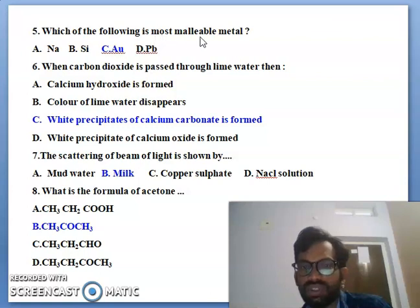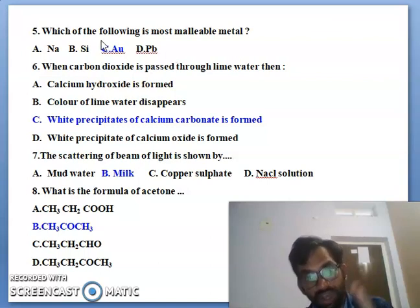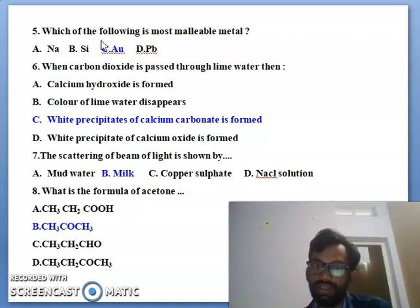Next you can see the fifth one bit, very simple, you can see which of the following is the most malleable metal: sodium, silicon, gold AU and lead. So which of the following is the most malleable metal is gold, gold is the correct answer.